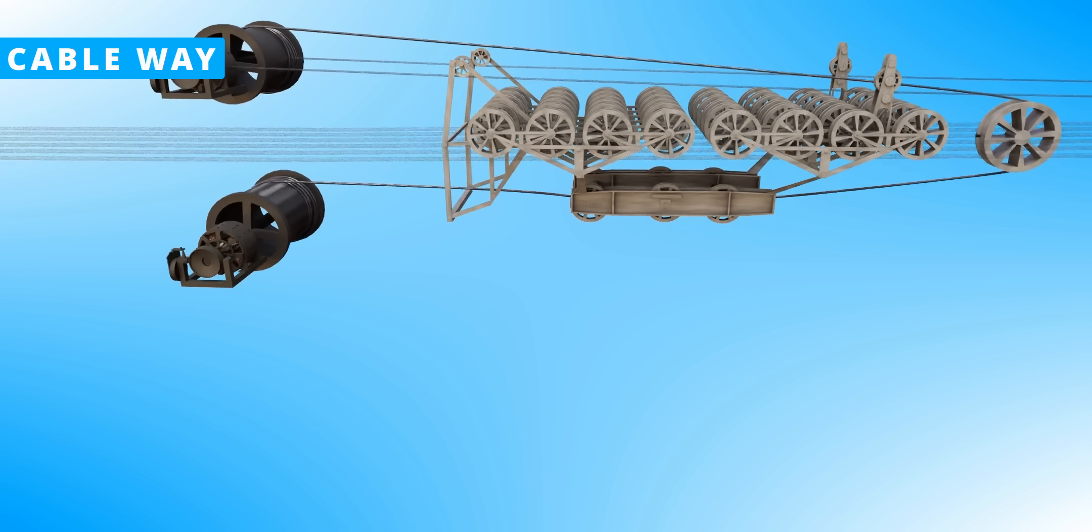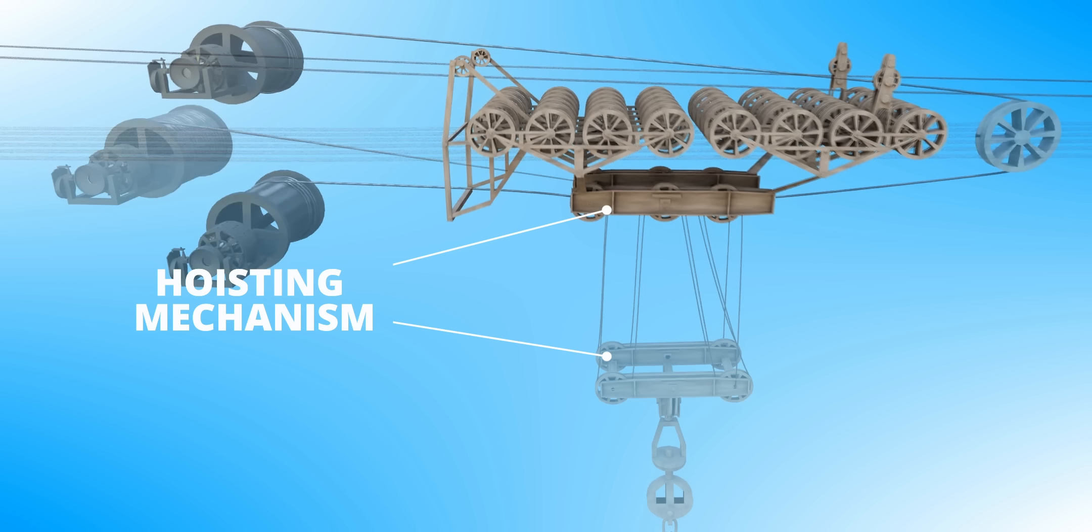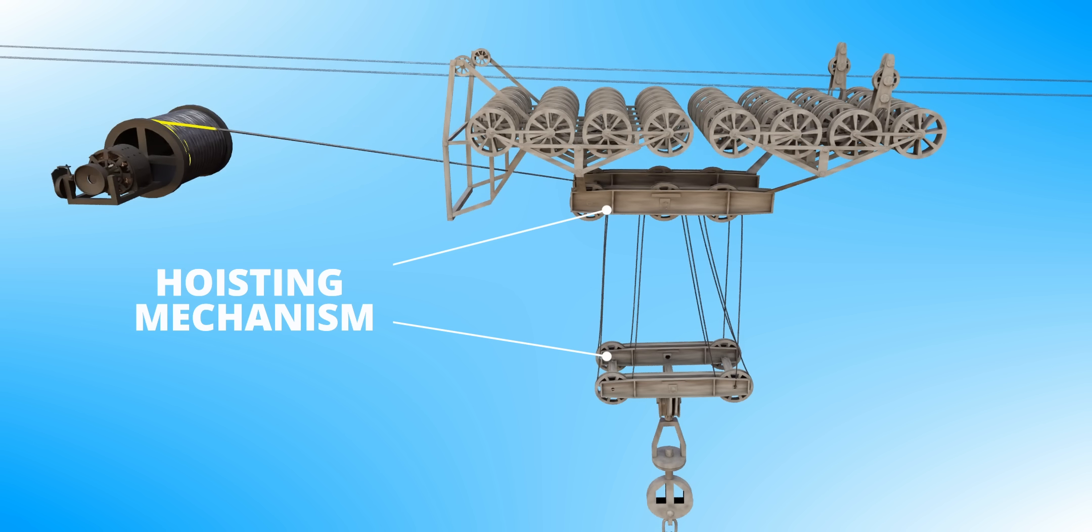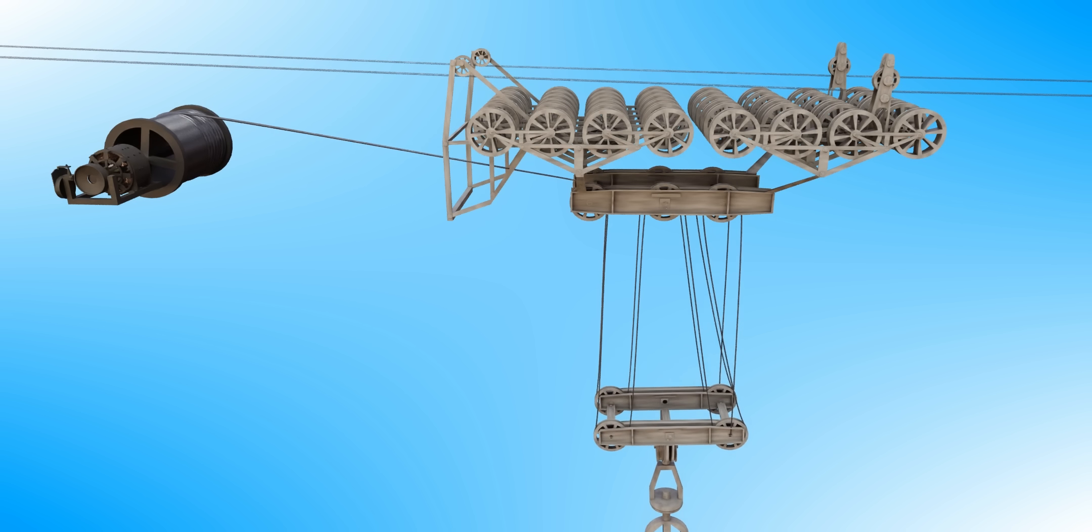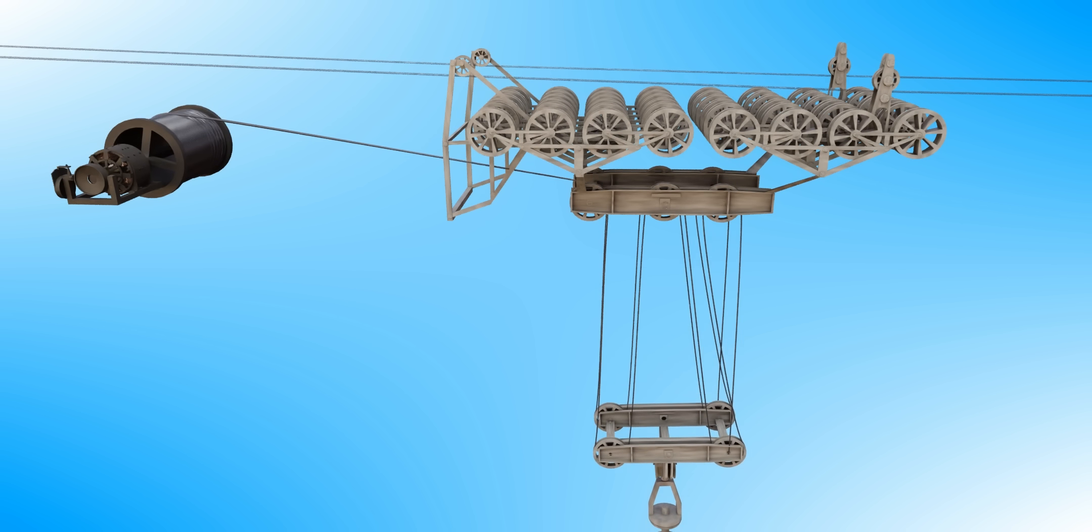Now, about the hoisting mechanism. An additional drum was used for this purpose. You can see the clever passage of the cable around the pulleys. You can also predict what happens to the hoist when the drum rotates.